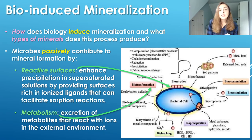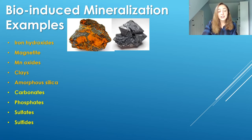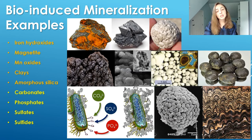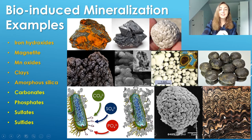Because sulfate-reducing bacteria produce sulfide, that sulfide can react with a bunch of other ions in solution and form sulfide minerals, which wouldn't be possible without them, because there isn't a lot else in those environments that forms sulfide abiotically. Only in environments like hydrothermal vents are you going to get abiotic production of sulfide and therefore abiotic mineralization of sulfide. Speaking of the different types of minerals that can be formed due to bio-induced mineralization, these include iron hydroxides, magnetite, manganese oxides, clays, amorphous silica, carbonates, phosphates, sulfates, and sulfides. Anions like carbonates, sulfates, and phosphates all want to grab onto the cations that had absorbed onto the bacterial surface due to its negative surface charge.